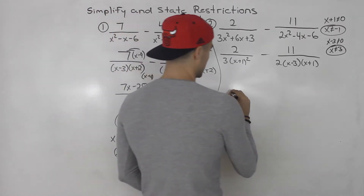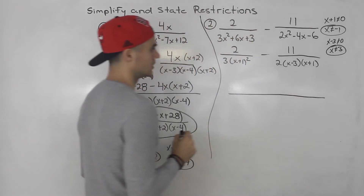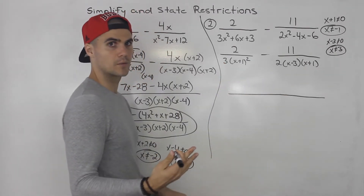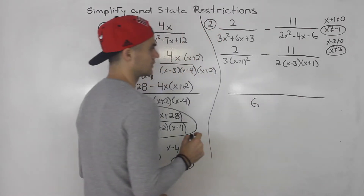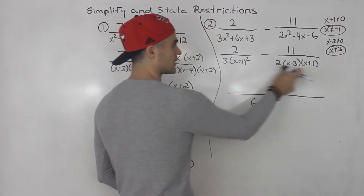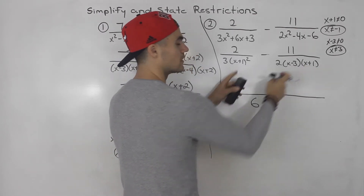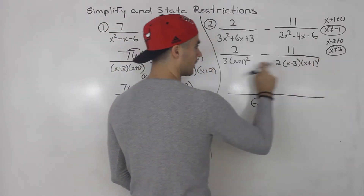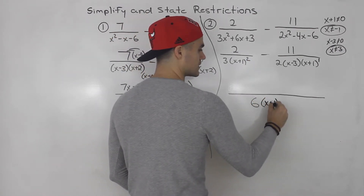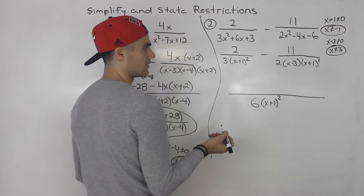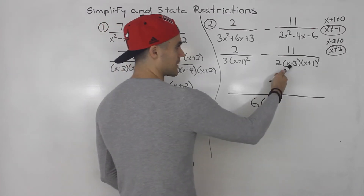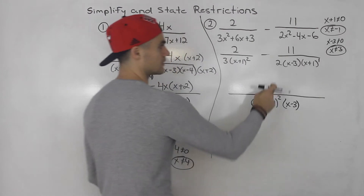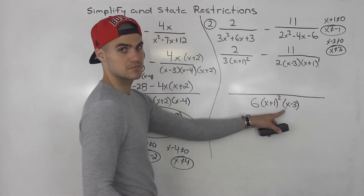Now we simplify by finding the lowest common denominator. We have the numbers three and two, and their LCD is six. We have x plus one squared and x plus one — when you have the same factor with different exponents, you always take the highest exponent, which is x plus one squared. And x minus three appears in the second denominator but not the first, so it must also be included.